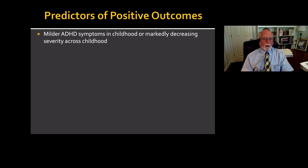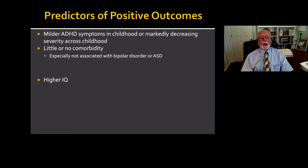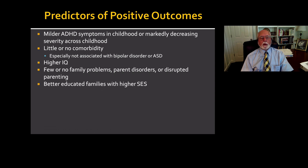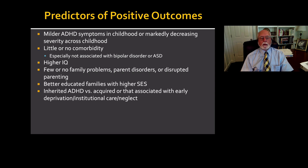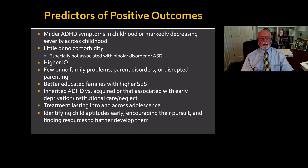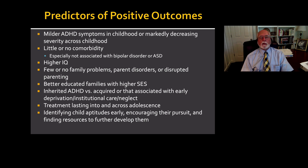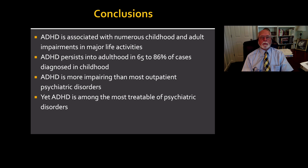Again, what predicts positive outcomes — not what predicts ADHD and its persistence, but what determines that someone with ADHD may be functioning relatively well compared to others with the disorder. These are the factors that research shows might pertain to better functioning in adulthood, and by looking down the list, they make imminent sense. So I won't spend any time on them other than to share them with you.